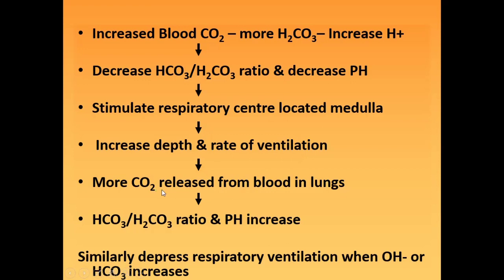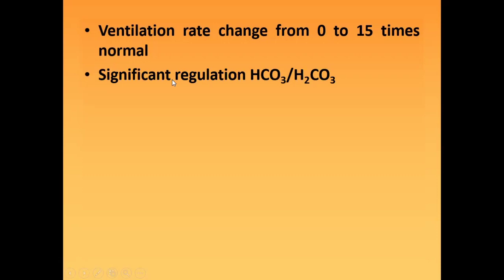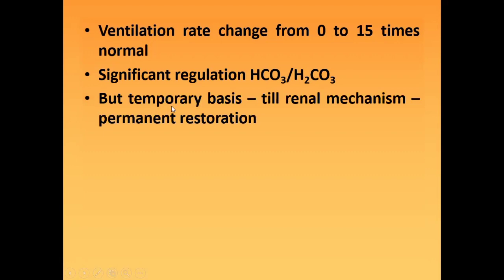In acidosis, carbon dioxide will be released, while in alkalosis, carbon dioxide will be retained. When carbon dioxide is released, the ratio will change and it will try to restore the pH — from the low pH, it will try to increase the pH. The opposite occurs in alkalosis: there is an increase in pH, and when carbon dioxide is retained, the pH will be decreased as compensation. Ventilation rate can change from 0 to 15 times normal, allowing significant regulation of the HCO3 to H2CO3 ratio.